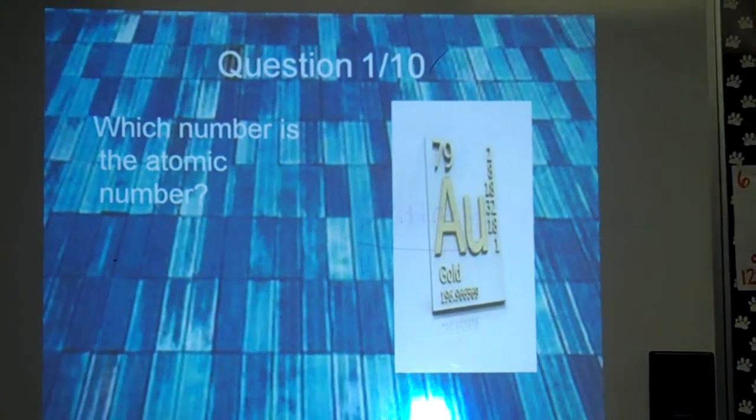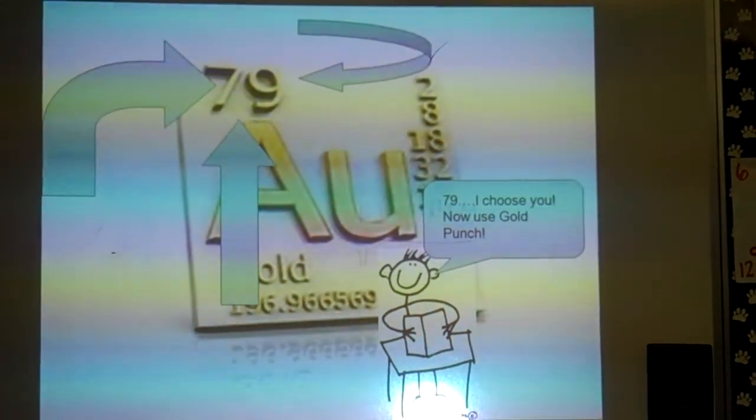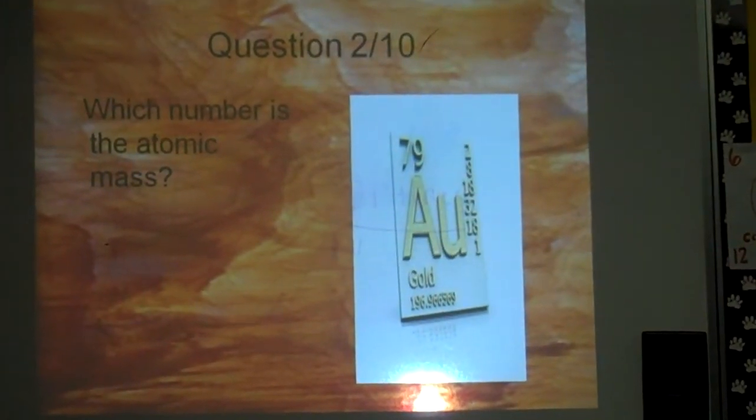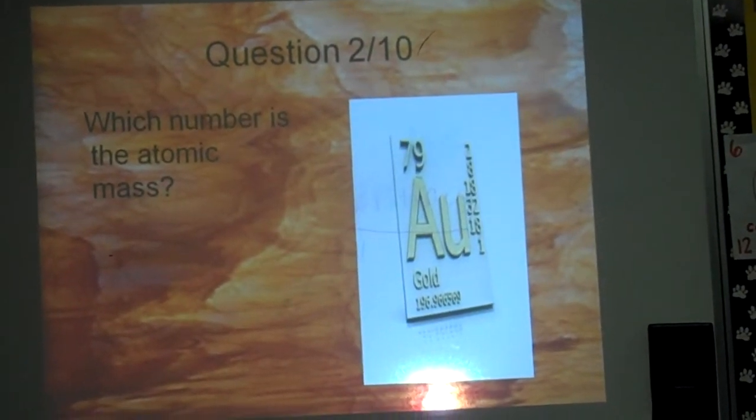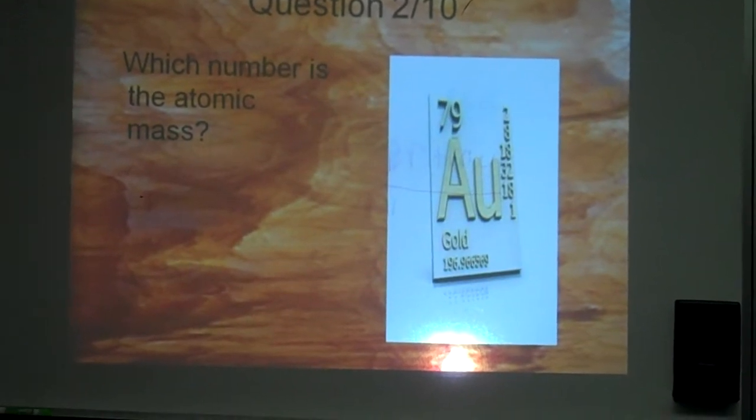Question 2: Gold is the atomic number. Josh answers: It's 79. Okay, which number is the atomic mass, Chris? Gold. At the bottom, 197.